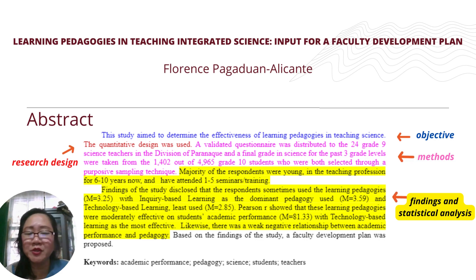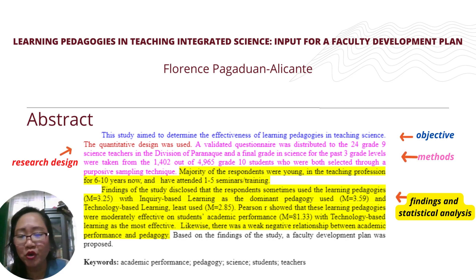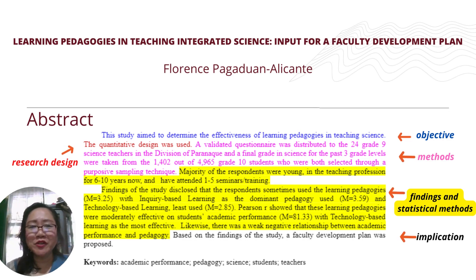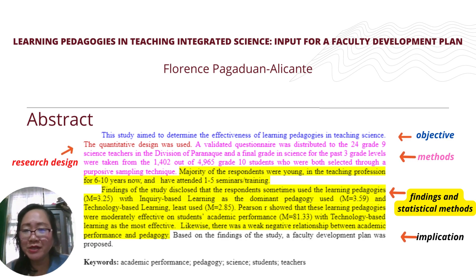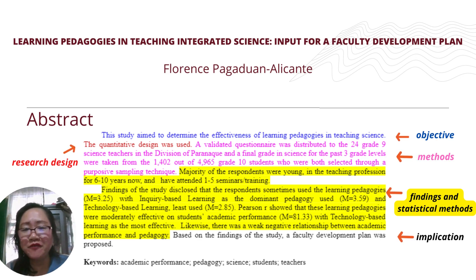Looking back at your own experiment, you can discuss here the average mean — the mean of the height of your control and experimental groups. Also include the implication of your research. The implication explains what the findings mean for policy making and for groups of people or other researchers. In our example, based on the findings of the study, a faculty development plan was proposed.